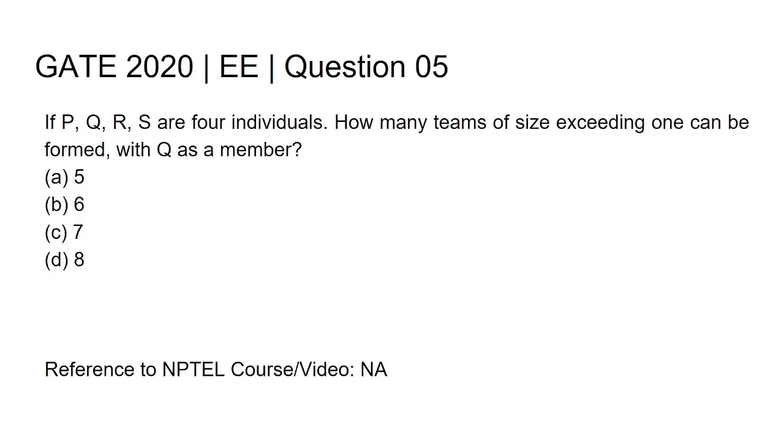Hi all, this is GATE 2020 Electrical Engineering question number 5. If P, Q, R, S are four individuals, how many teams of size exceeding one can be formed with Q as a member? Options are 5, 6, 7, or 8.